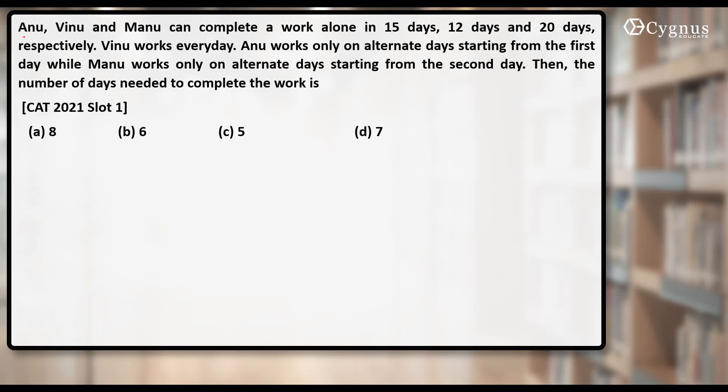What's given in the question: Anu, Vinu and Manu can complete a work in 15 days, 12 days and 20 days respectively. So indirectly we know their efficiencies. Vinu works every day. Anu works only on alternate days starting from the first day, that means Anu will be working on first day, then third day and fifth day and so on.